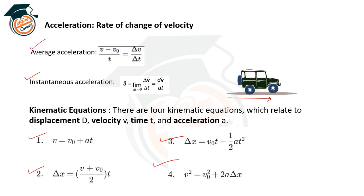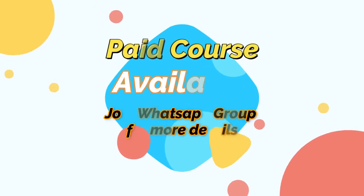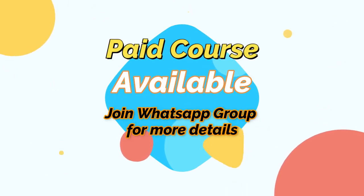Deriving the first equation of motion: V = V₀ + at. At time t = 0, initial velocity is V₀, displacement is x₀, and acceleration a is constant. Using the average acceleration formula: Δv/Δt = (v − v₀) / t = a. By cross multiplication: v = v₀ + at. This is the first equation of motion.